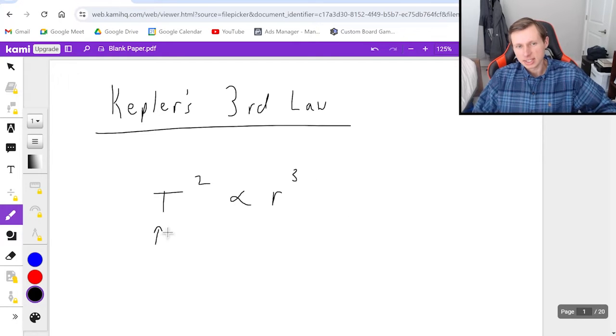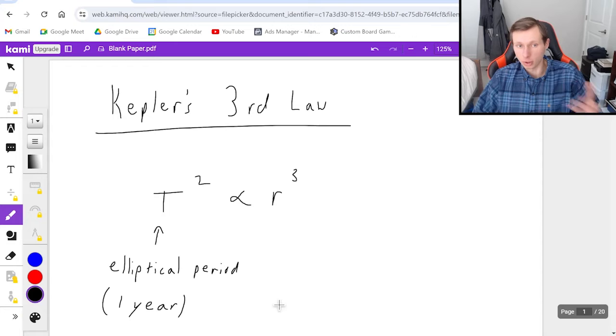So one more time, T is the elliptical period, which is just really fancy talk for one year, at least one year for Earth, because that's how long it takes for the Earth to go around the sun.